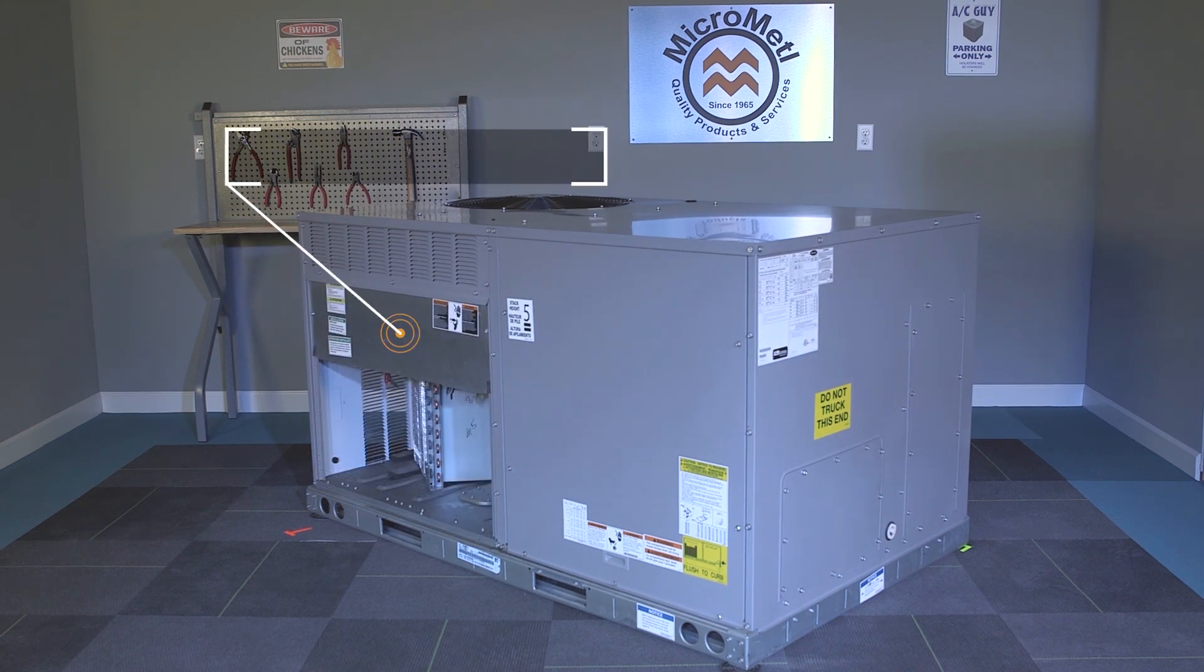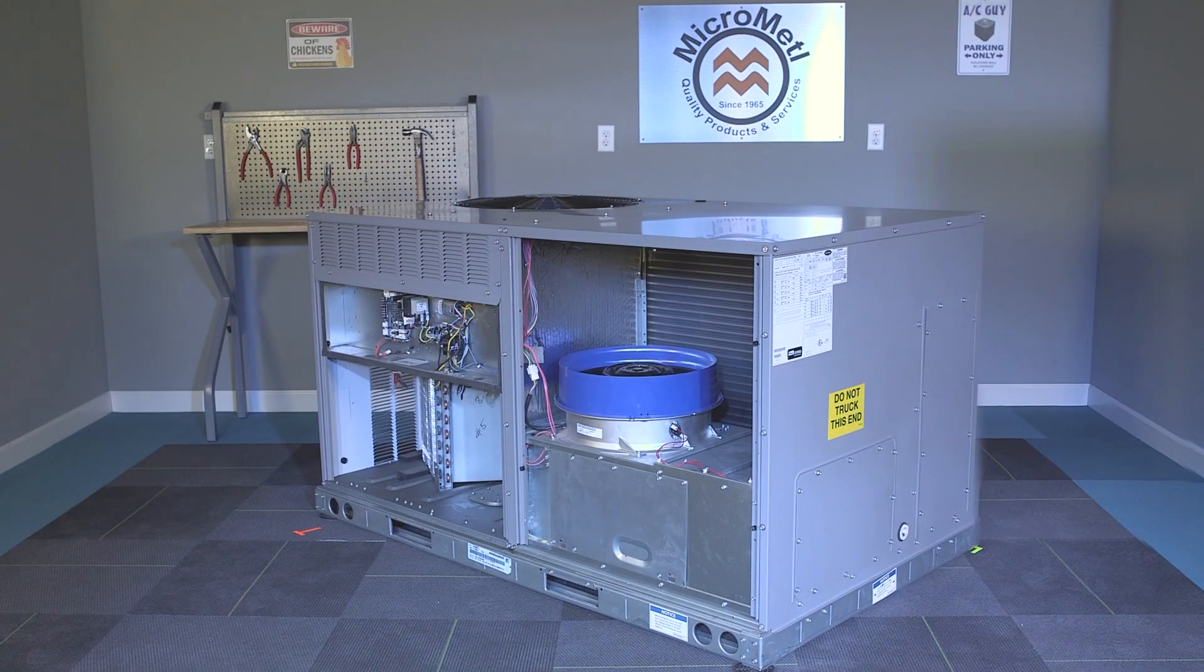Remove the inner control box panels. This will allow you to install the W7220 controller and route wiring into the blower compartment.